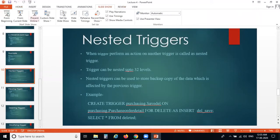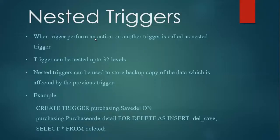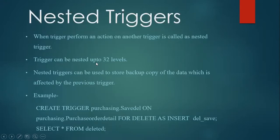The first point is nested triggers. When a trigger performs an action on another trigger, it is called a nested trigger. A trigger can be nested up to 32 levels.